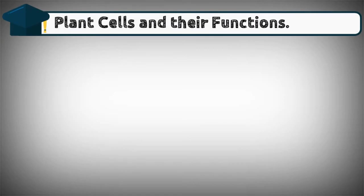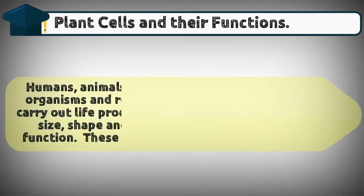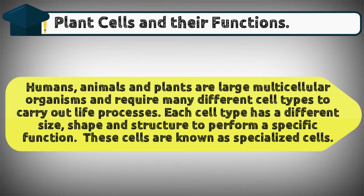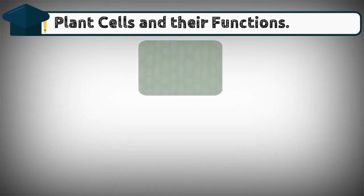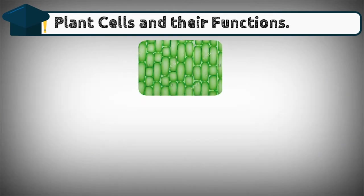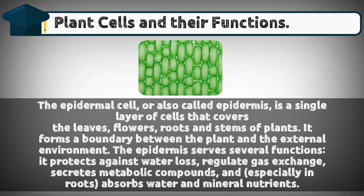Plant cells and their functions. Humans, animals, and plants are large multicellular organisms and require many different cell types to carry out life processes. Each cell type has a different size, shape, and structure to perform a specific function. These cells are known as specialized cells.